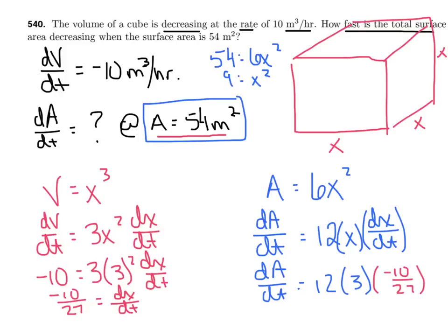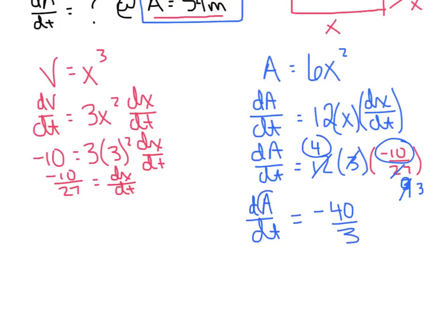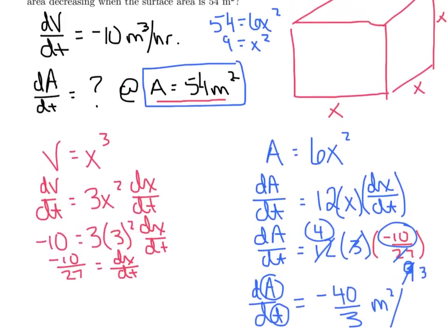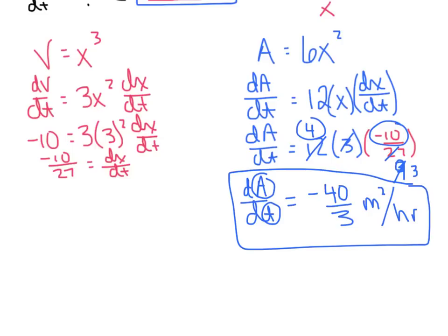From that point forward we just do a little arithmetic. The area is changing at a rate of dA/dt = 12(3)(−10/27). Simplifying: 3 goes into 27 nine times, and 3 goes into 12 four times, giving us −40/3. The units are meters squared per hour, so dA/dt = −40/3 m²/hr. That's the answer for the first problem.